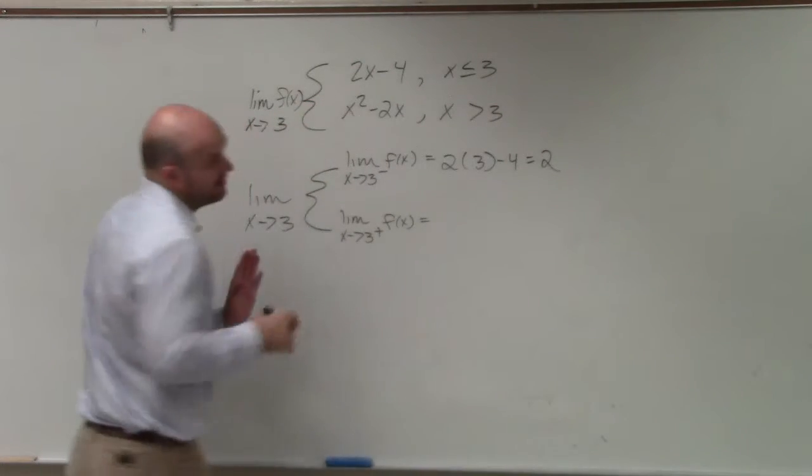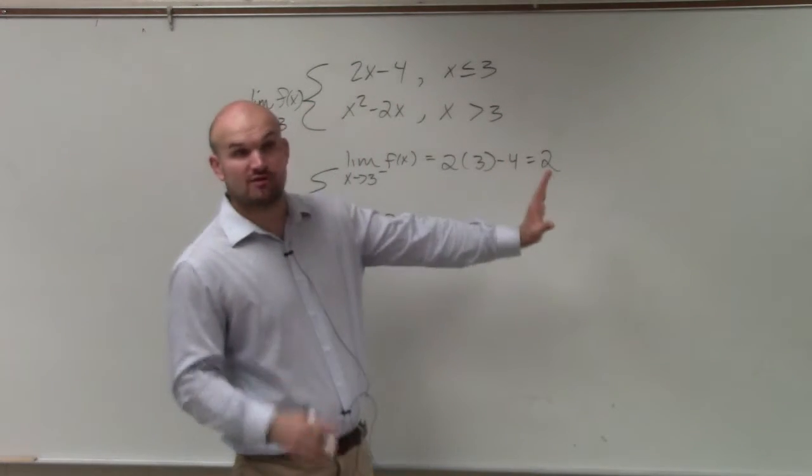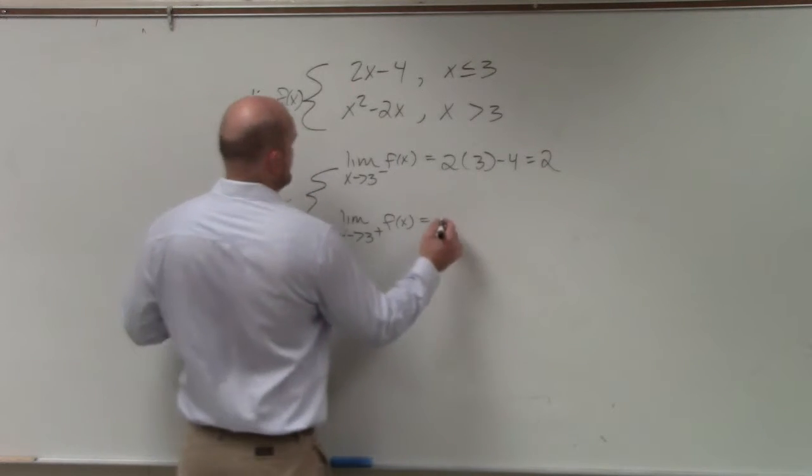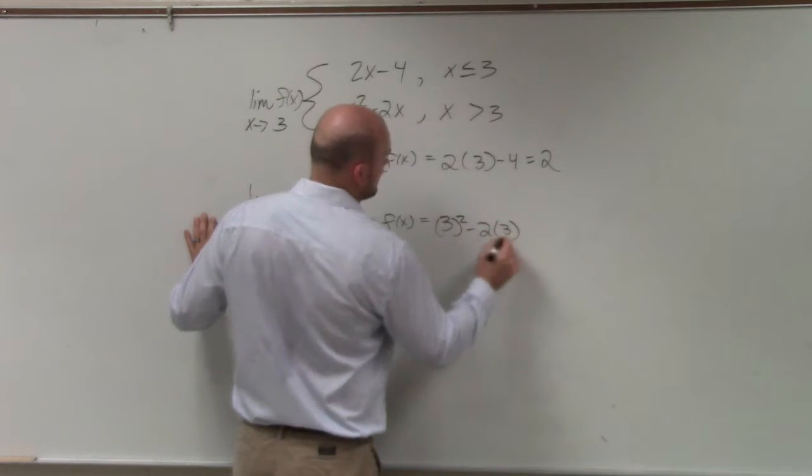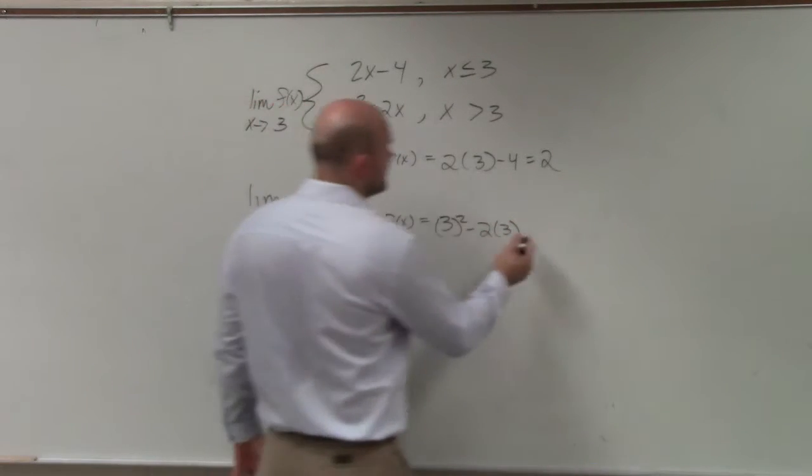From the right-hand limit is going to be the function where the x values are greater than 3, which would be using this function. So you're just going to type in 3 squared minus 2 times 3. 3 squared is 9, minus 6 is equal to 3.